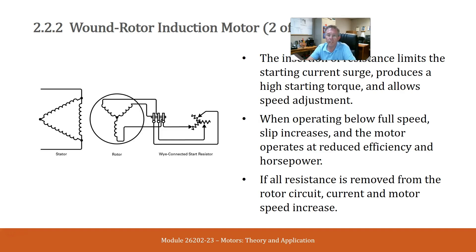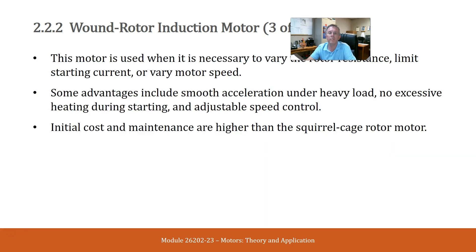If all resistance is removed from the rotor circuit, current and motor speed increase. This motor is used when it is necessary to vary the rotor resistance, limit starting current, or vary motor speed. Some advantages include smooth acceleration under heavy load, no excessive heating during starting, and adjustable speed control. Initial costs and maintenance are higher than the squirrel cage rotor motor.